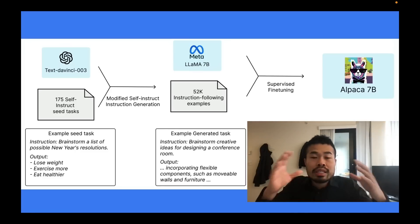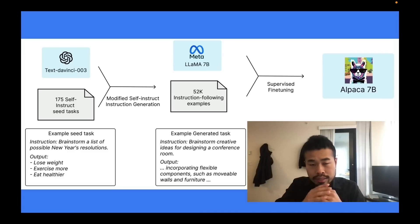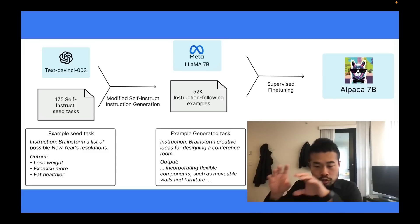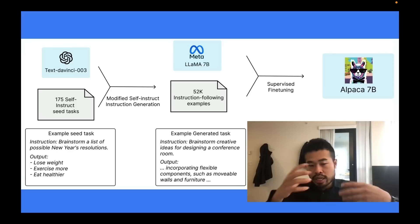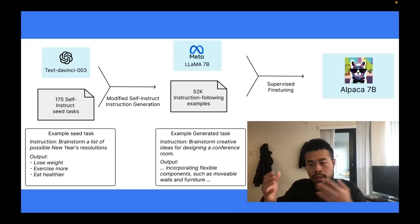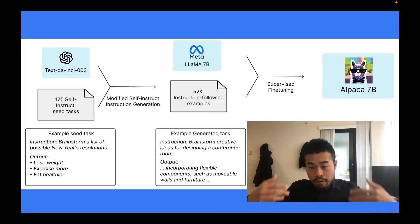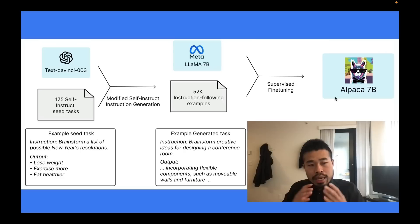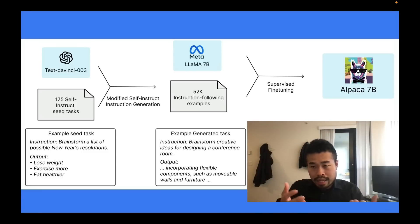If you tell the LLaMA base model what to do — put some instruction in and ask it to do a task like summarization — the model just won't perform well because it wasn't trained on that kind of instruction. So what Alpaca did was use ChatGPT to generate responses for instructions. You feed a lot of instructions and inputs to ChatGPT, ask it to generate responses, keep collecting those responses, and repeat — ending up with 52,000 instruction-following examples.